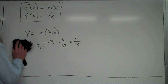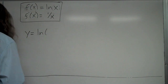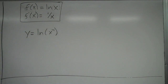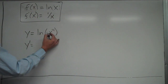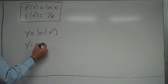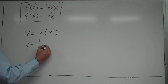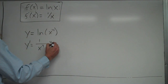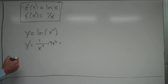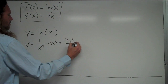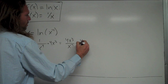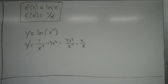Let's take a look at another derivative. What if I had the natural log of x to the 4th? To take the derivative of that, it's 1 over what's inside, which is x to the 4th. So it's 1 over x to the 4th, times the derivative of what's inside using the chain rule, which is 4x cubed. That simplifies to 4x cubed over x to the 4th, which simplifies down to 4 over x.